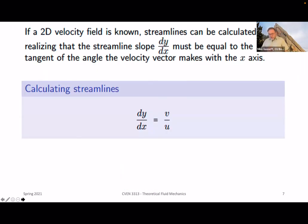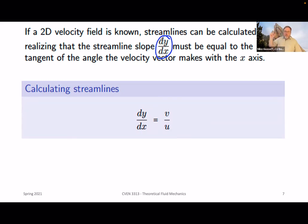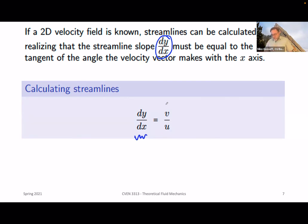If a 2D velocity field is known, streamlines can be calculated by realizing that the streamline slope, dy/dx, must equal the tangent of the angle of the velocity vector with the X axis. If we have some curved flow path with some curvature, the tangent is essentially the first derivative — at any point, the slope can be drawn as a tangent. So dy/dx is equal to the ratio of V over U — the Y component of velocity over the X component of velocity.